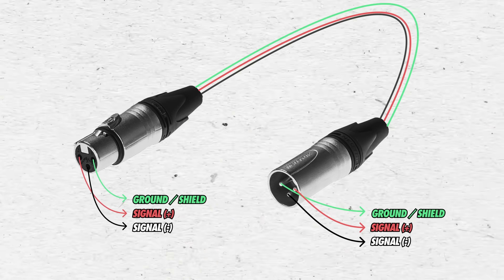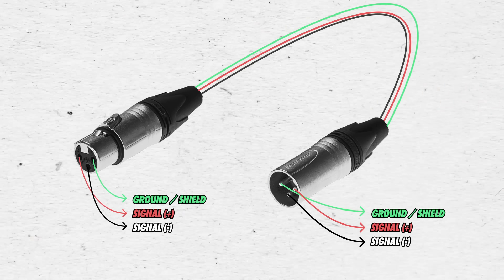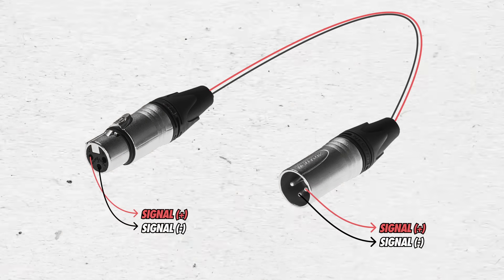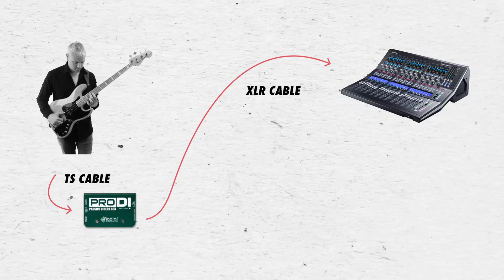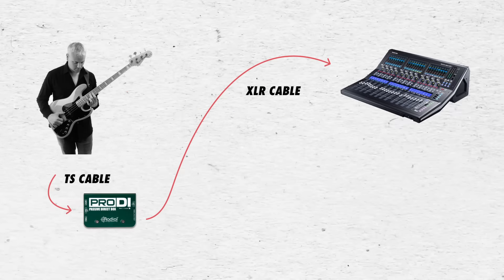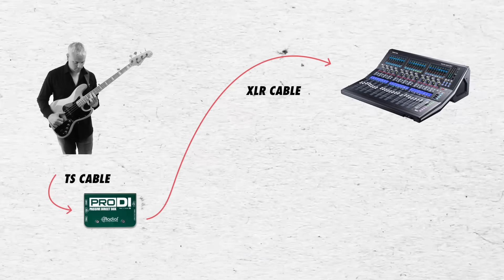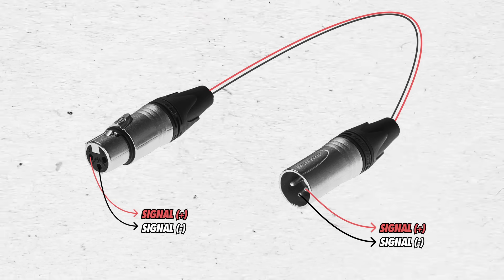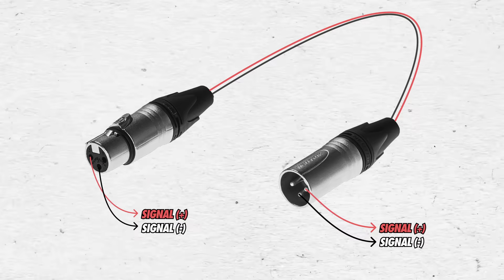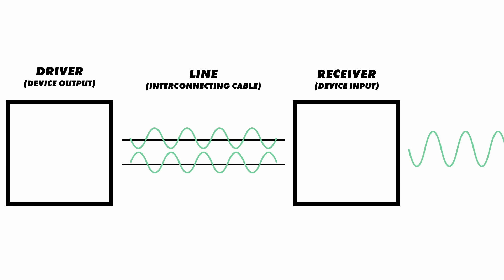Rather than a signal conductor and a ground, an XLR cable has two signal wires and a shield. Let's ignore the shield for now and focus on these two signal wires — this is one of the coolest things in audio. With the transformer coil inside the DI box and the differential input on the mixer, there will be a positive representation of the signal on one of these wires and a negative representation on the other. That means when one is positive, the other is negative — the signal on these two wires is completely opposite.